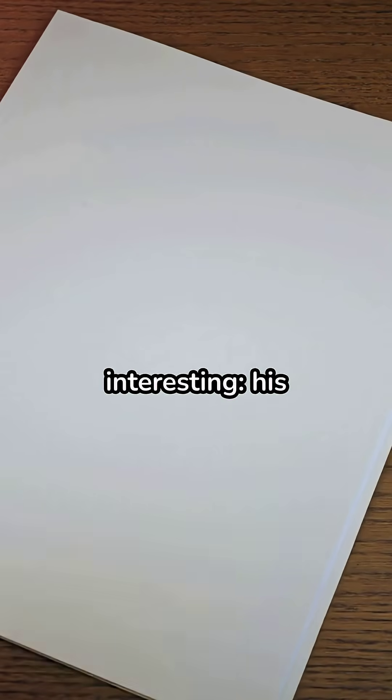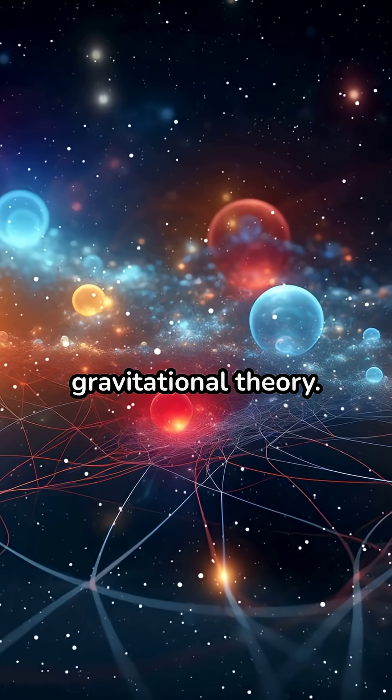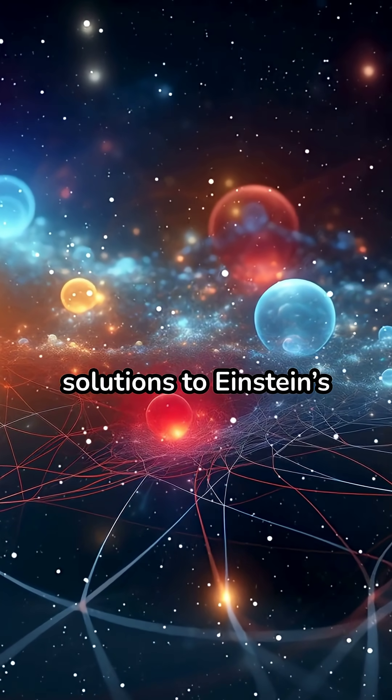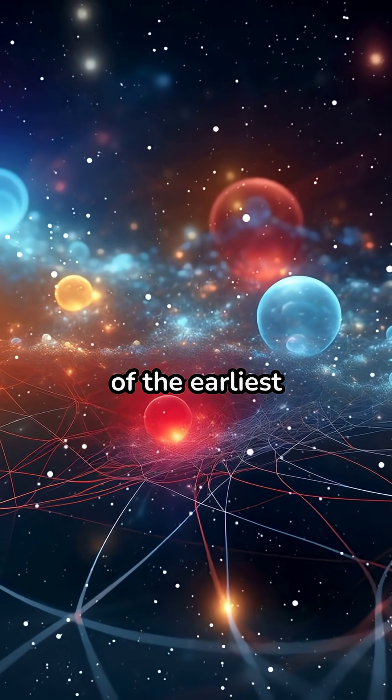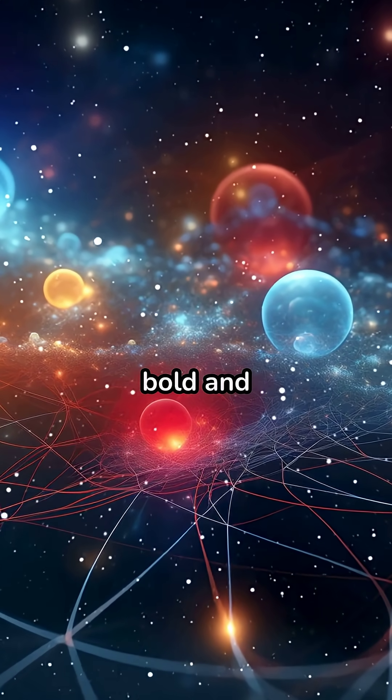It gets more interesting. His father, Louis Witten, quietly worked on the fringes of gravitational theory. In the 1950s and 60s, he explored exotic solutions to Einstein's equations, some of the earliest theoretical hints at anti-gravity. It was speculative, bold, and decades ahead of its time.